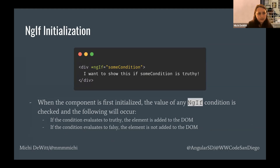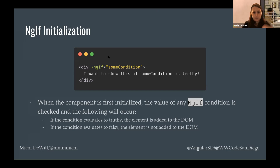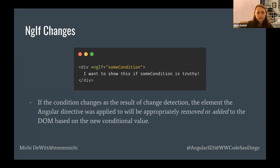Let's walk through the initialization process. When a component gets initialized, any ngIf on an element — in this case a div — will check the value of that condition. If it evaluates to truthy, the element will be added to your DOM and you'll see it on the page. If it evaluates to falsy, the element is just not going to be added at all. Throughout the lifecycle of your component, if anything changes in your data that affects the value of that condition, the binding will get checked again and the element will be appropriately added or removed.